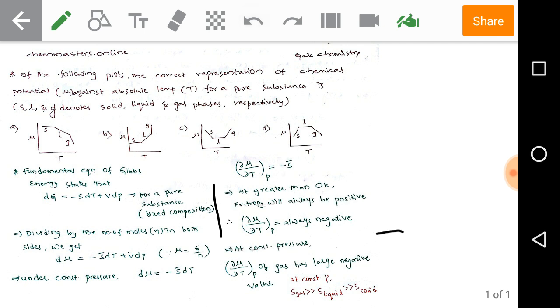And at constant pressure dou mu by dou T of gas has large negative value. So we know that entropy will be more for gas when we compare with liquid and when we compare with solid. Hence dou mu by dou T of the gas should be having more negative value.